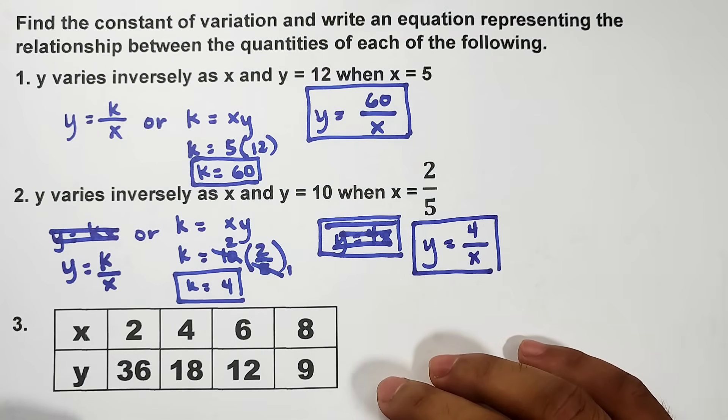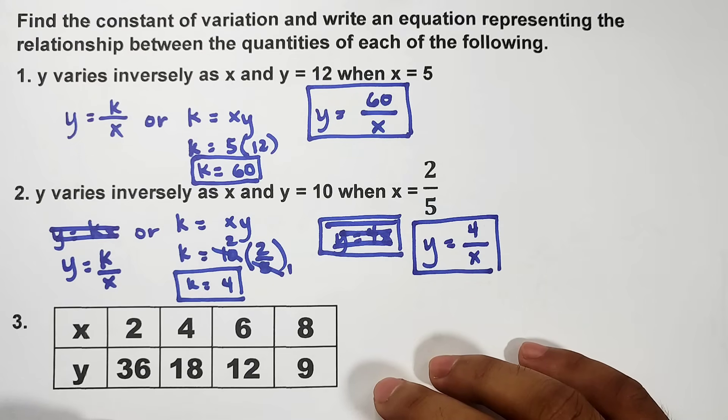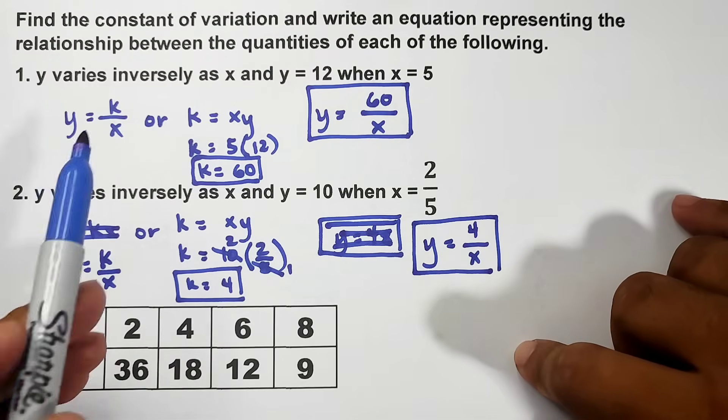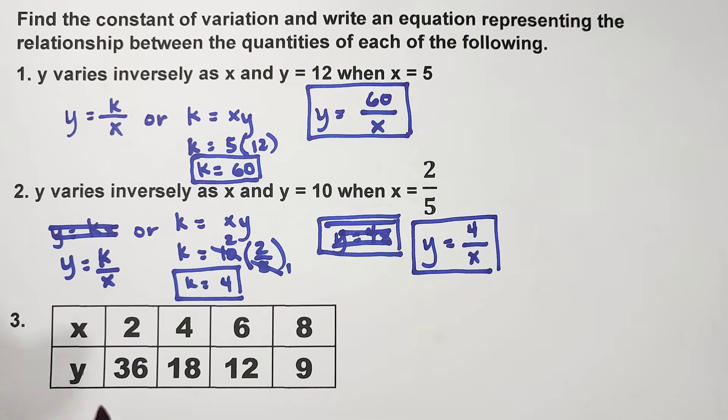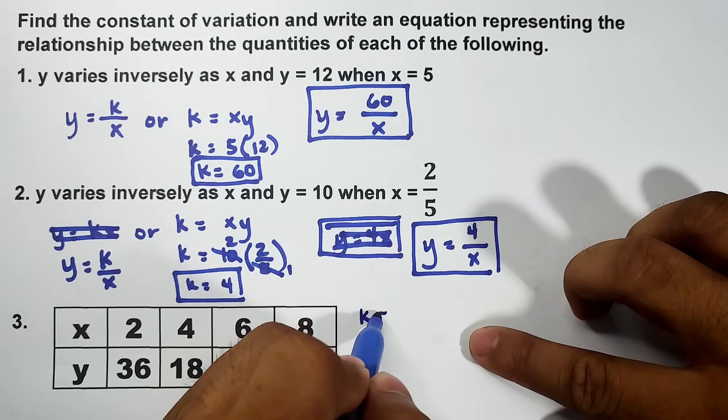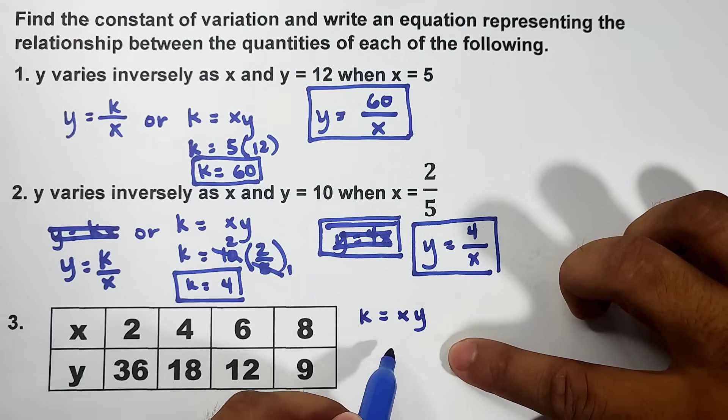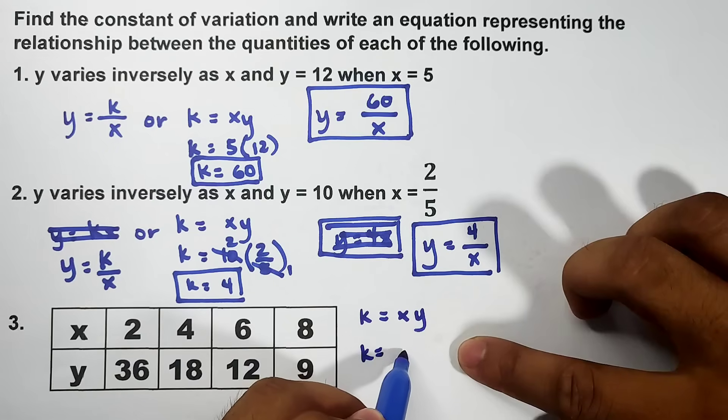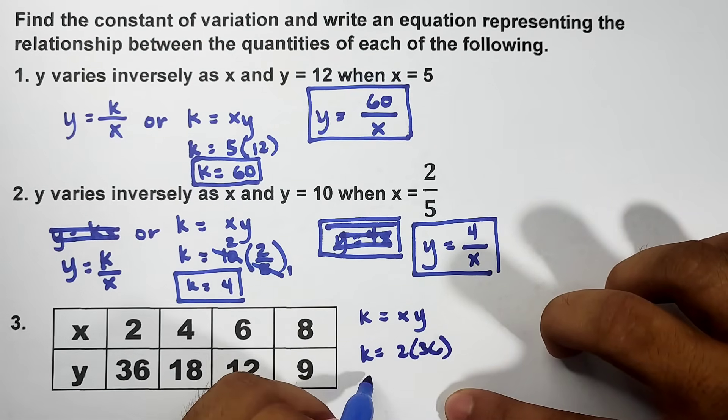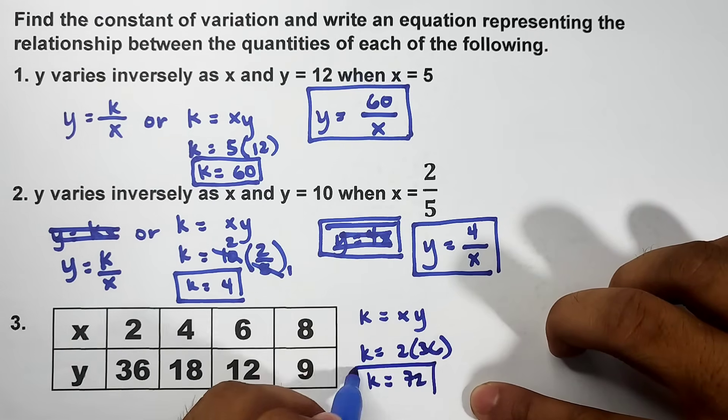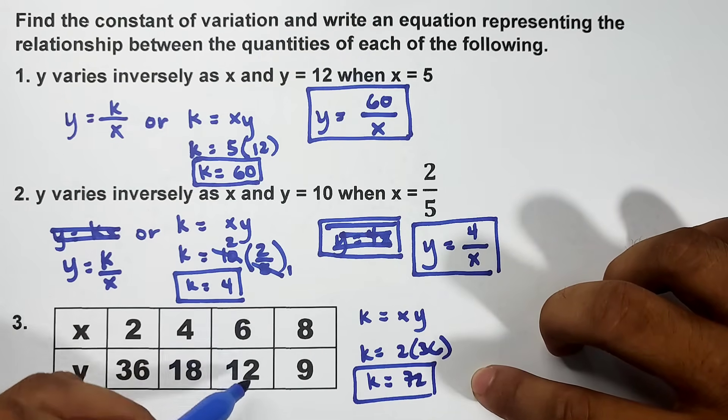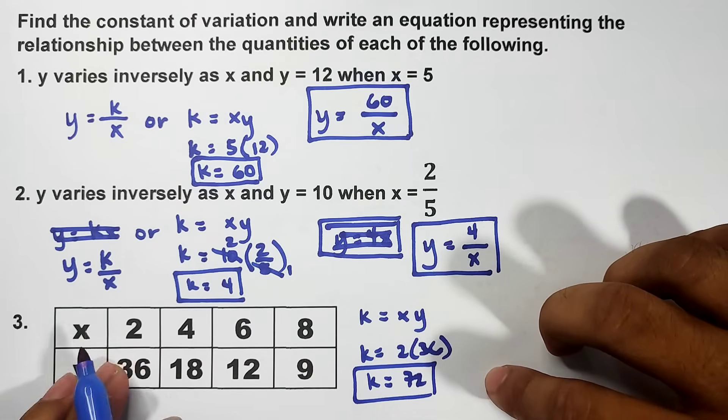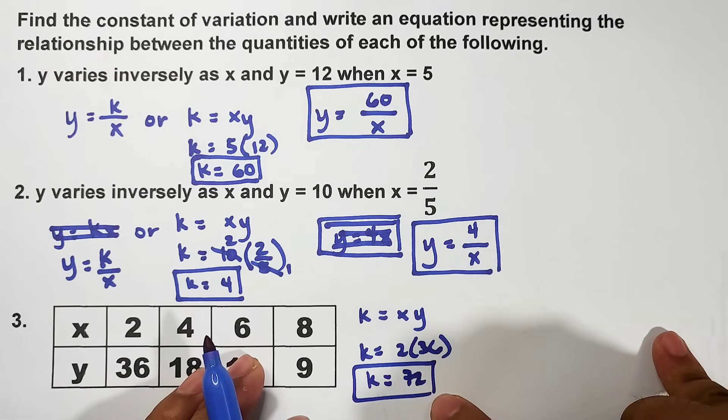What if a table is being given? How are we going to find the constant of variation? Using this formula k equals xy, be careful guys - not all tables that are increasing or decreasing are inverse variation. They need to have the same constant. Let's try. Using k equals xy, let's try the first one: k equals 2 times 36, this is 72. When we try the others, they should also be 72. Let's try: 4 times 18 is 72, 6 times 12 is 72, 8 times 9 is 72. Definitely this is inverse variation.